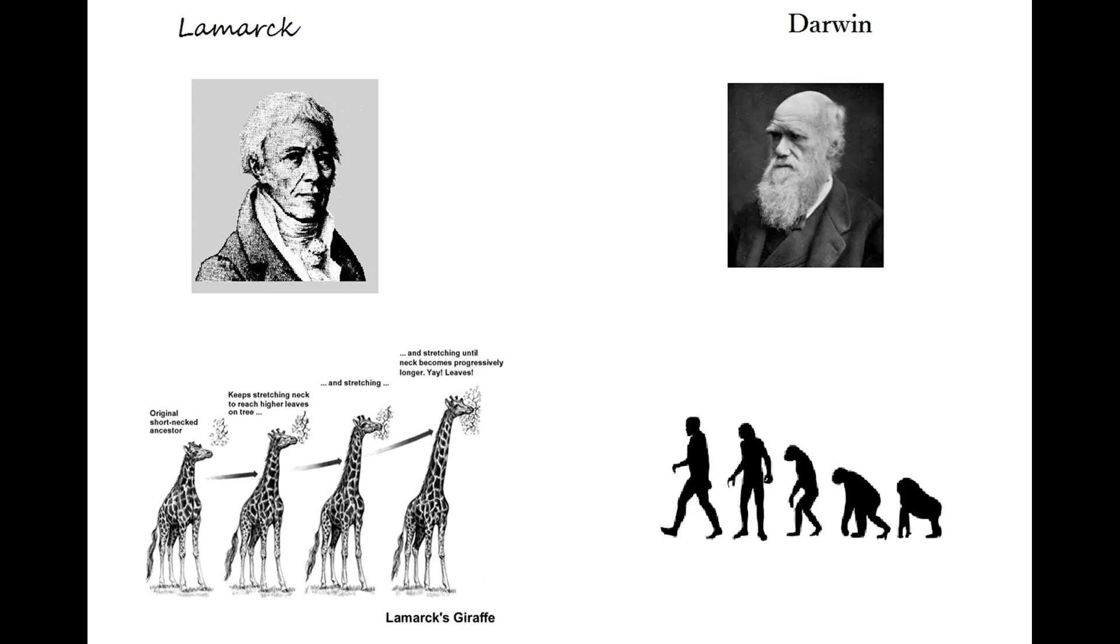Of course, the obvious issue with that is that if this were the case, extinction of a species or the death of any line of variant would be much lower than what it is, since all organisms would observe various survival issues within their environment and evolve or adapt in accordance.